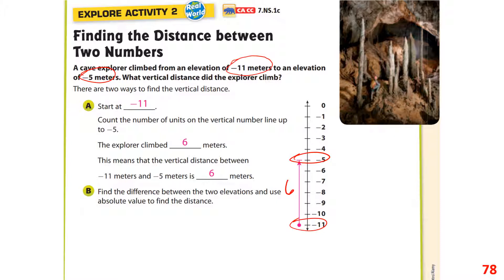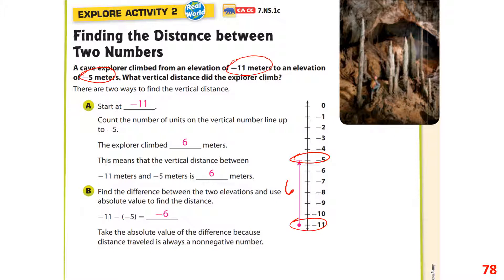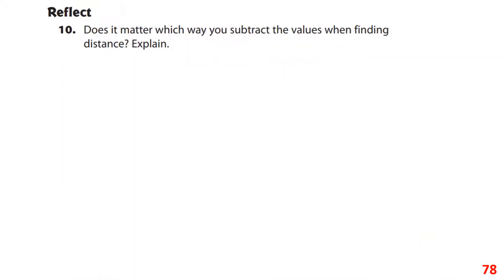You can also find the distance by subtracting the two elevations and taking the absolute value. Negative 11 minus negative 5 equals negative 6; the absolute value of negative 6 is 6. Distance is always non-negative, and the vertical distance is six meters regardless of which value you subtract from which.